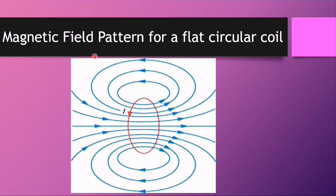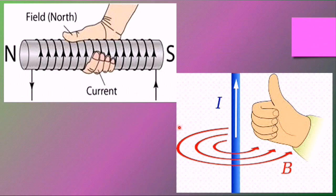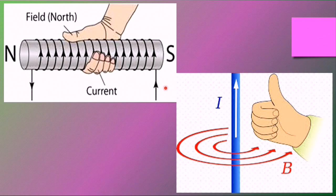This right hand grip rule can also be used to find out the field lines due to a flat circular coil. This is a flat circular coil. See the direction of the current and the direction of the lines of flux due to this circular coil. This direction is also determined by right hand grip rule.